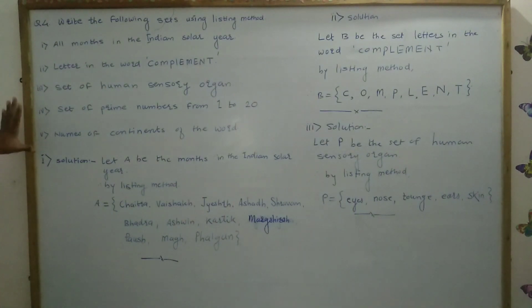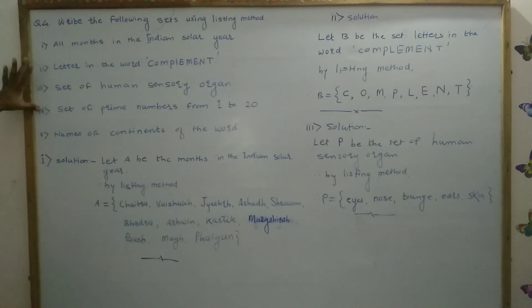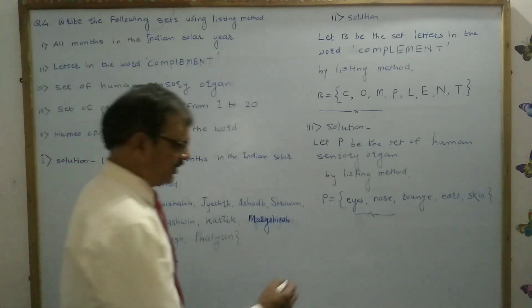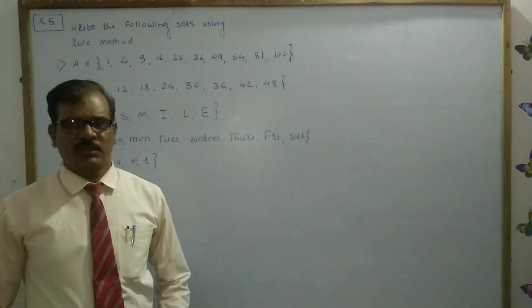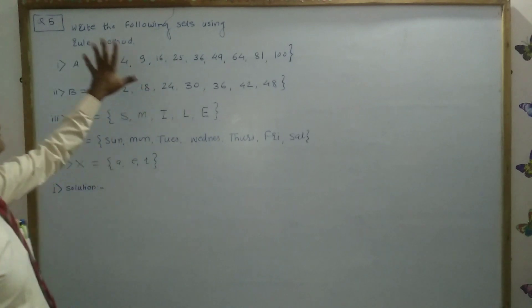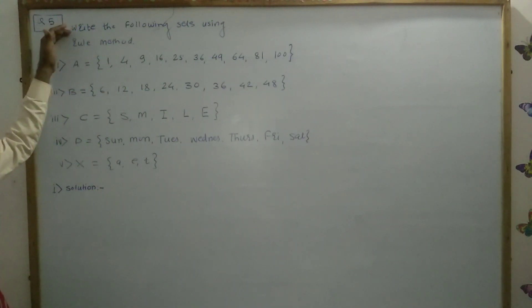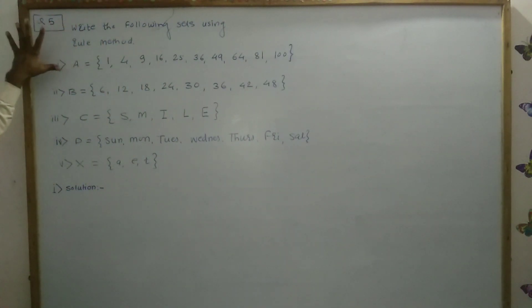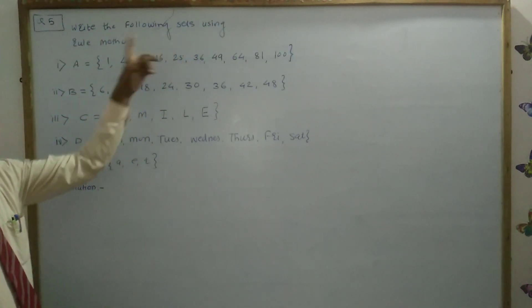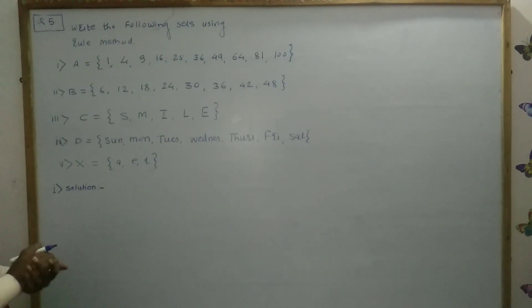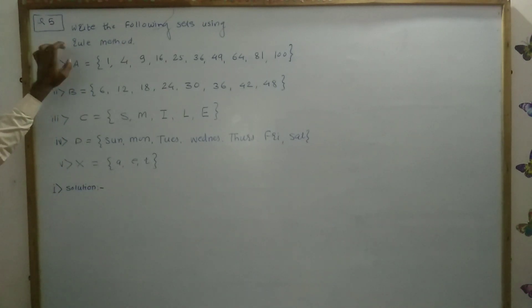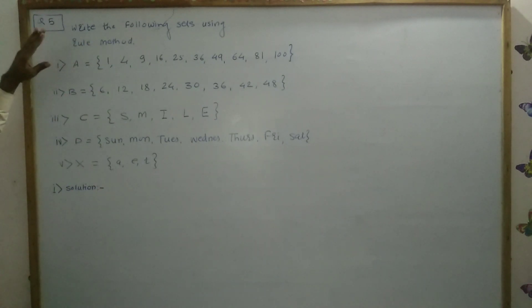Now, after the remaining two problems, you try to solve them as homework. Now in question number 5, we are continuing question number 5 after 4. So in this question, write the following set using rule method. Let us see how to write the set according to the rule method.